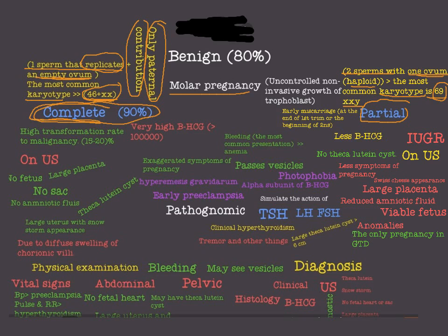Because in complete molar pregnancy we have only paternal contribution, there is a greater possibility of malignant transformation in the future, and also because of the very high beta HCG. With only paternal contribution, we have a more foreign body in the uterus that is not completely related to the mother.